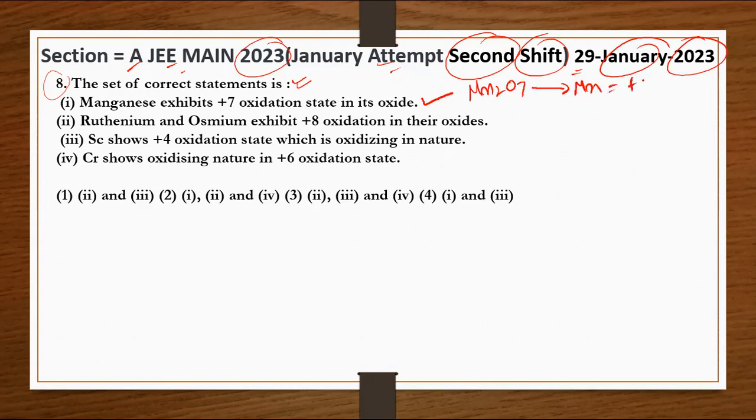Second statement में क्या लिखा है - Ruthenium and Osmium exhibit +8 oxidation state in their oxides। तो आपको पता है, आप सभी ने पढ़ा हुआ है RuO4 and OsO4। तो इन दोनों में ही जो oxidation state है वो +8 आ रहे है।